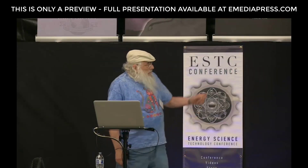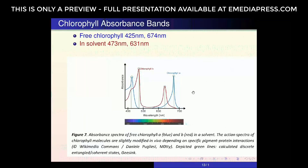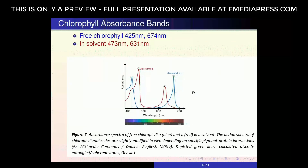Here's the chlorophyll. We have two kinds of chlorophyll: in blue is the free chlorophyll. Sometimes chlorophyll comes in a solvent. For free chlorophyll, we have absorption peaks at 425 nanometers and 674 nanometers — spread quite far apart. Put it in the solvent, and the peaks change: the absorption peaks shift and get closer together. All four of these absorption peaks correspond to life-beneficial frequencies.